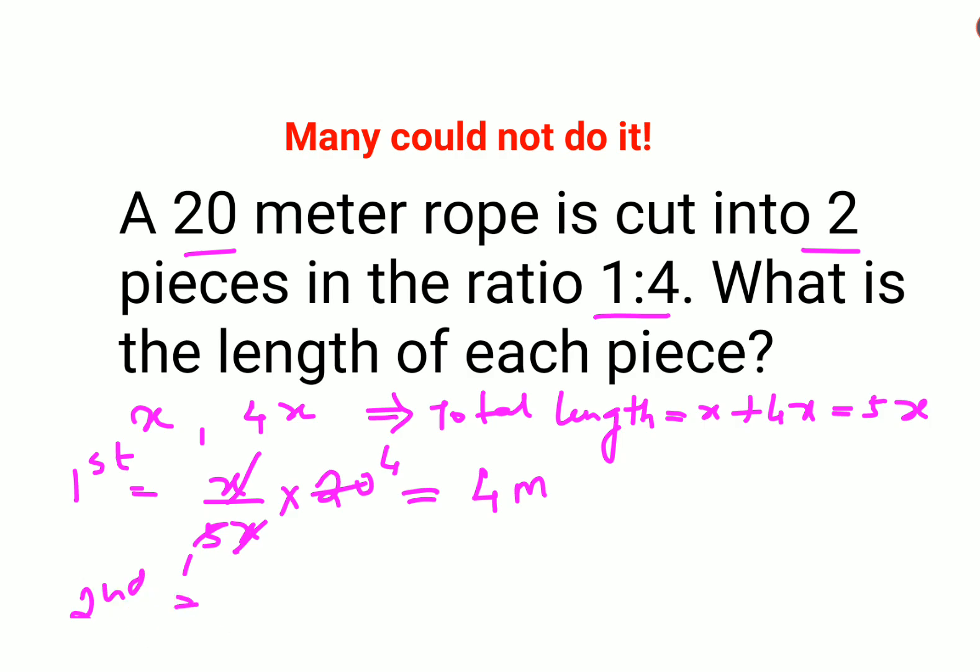Second part, I don't need to do this, I can see, I can end up doing this, 4x upon 5x into 20, right, because second part is 4x, so this cancels, 1x, 4x, so this gets you 16 meters.